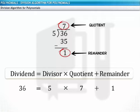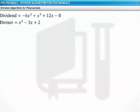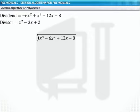Suppose we have polynomials as the dividend and divisor. To perform the division, first we arrange the terms of the dividend and divisor in decreasing order of their degrees. Thus, the dividend becomes x cube minus 6x square plus 12x minus 8. Let's perform the division.